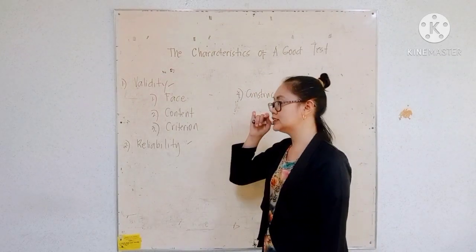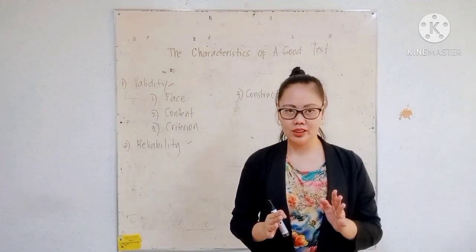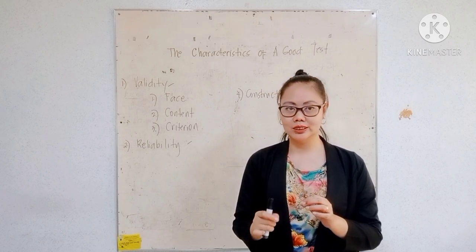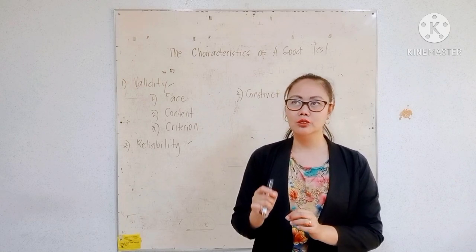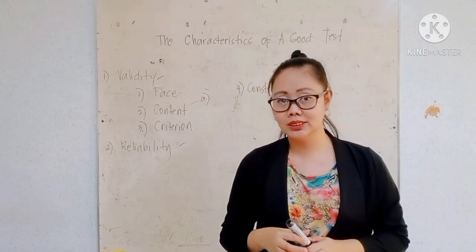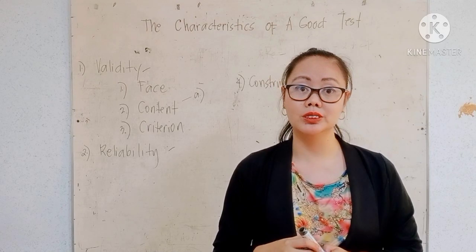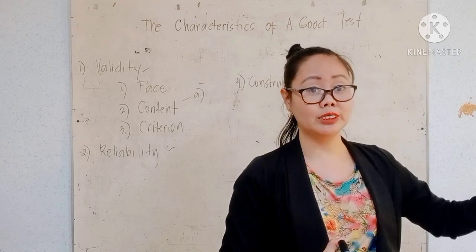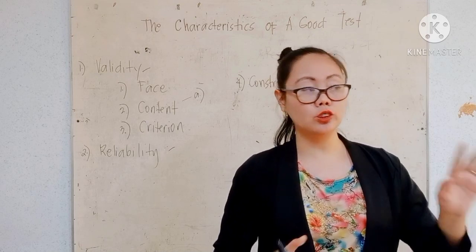The next type is content validity. Since this is about content, it refers to what is inside the test paper — not just the physical appearance, but the content itself. The first thing to consider for content validity is whether the test items are congruent or relevant to all of the test objectives — whether the test was made based on the objectives in the lesson plan or in the table of specification.